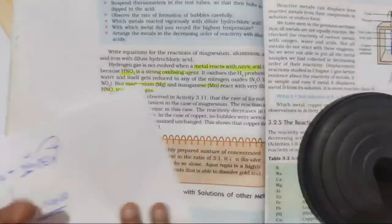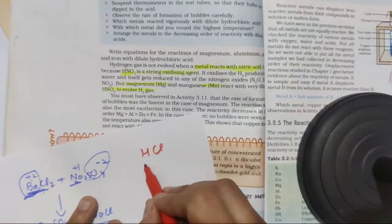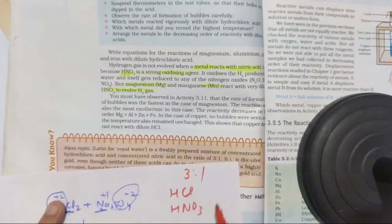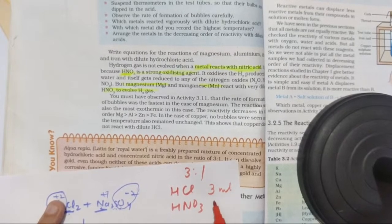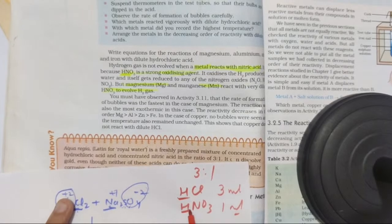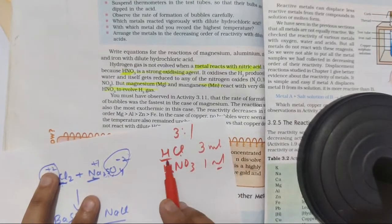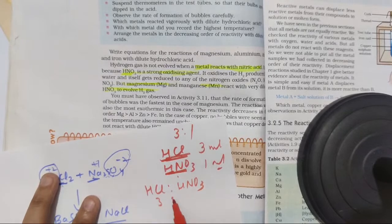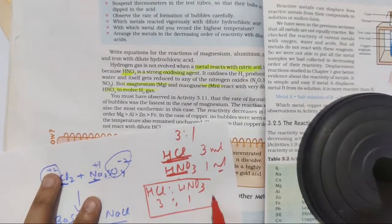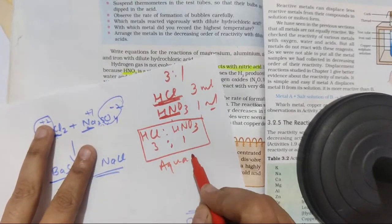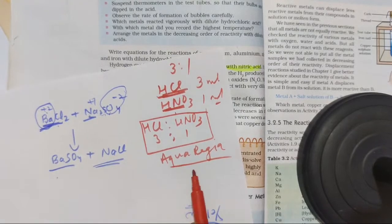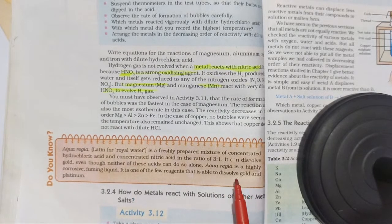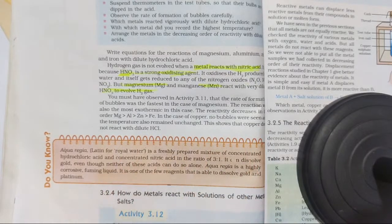Aqua regia is a mixture of two acids: HCl and HNO₃. The ratio is 3:1 — 3 parts HCl and 1 part HNO₃. To remember the ratio, notice that HCl comes before HNO₃ alphabetically, so HCl is 3 and HNO₃ is 1. We call it aqua regia or royal solution because it can dissolve even gold — which is highly unreactive — and also platinum.